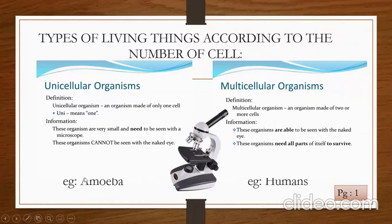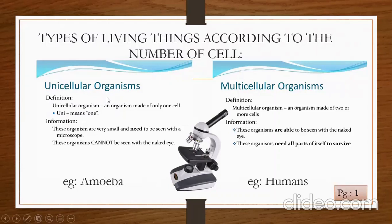The best example of a unicellular organism is amoeba. Apart from amoeba, all the viruses and all the bacteria — they all are made up of only one cell. So they all come in the unicellular organism category.